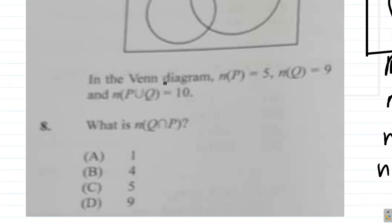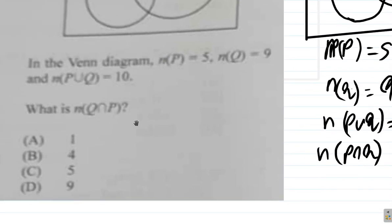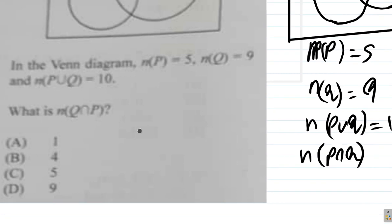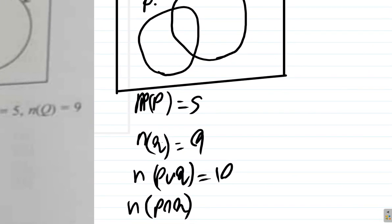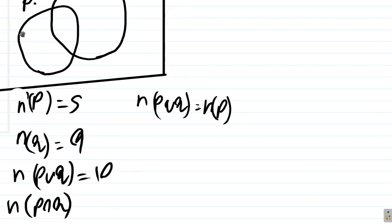All right. So is it 1, 4, 5, or 9? Now here, you can use different methods of doing it. You can use a formula. The formula says the number in P union Q is equal to the number in P plus the number in Q minus the number in P intersect Q.